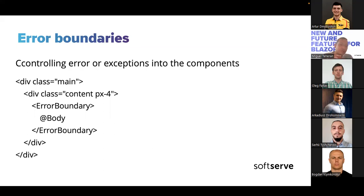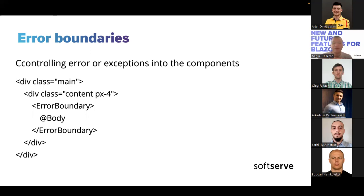We have another important feature: error boundaries. In the past, if we had issues in a component, we needed a try-catch statement to control the error — that was the only way to control UI errors. Blazor was controlling these with a generic error by default. But with error boundaries, we have the possibility to catch the error and show something specific, something personalized, with a better user experience.